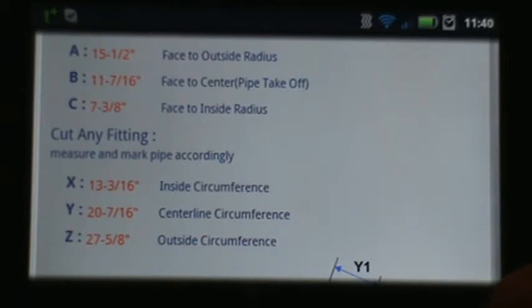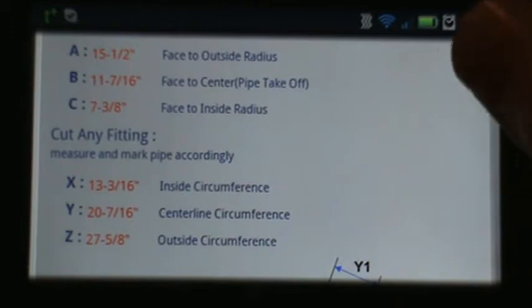And then since we need to cut this fitting from a 90, we need the X, Y, and Z values. X will be the inside circumference. Y is the center line circumference. And Z is the outside circumference.